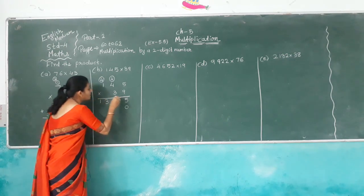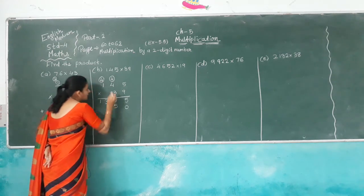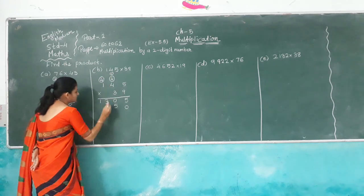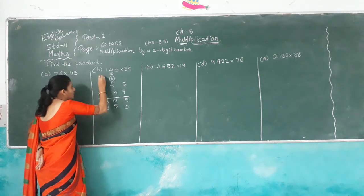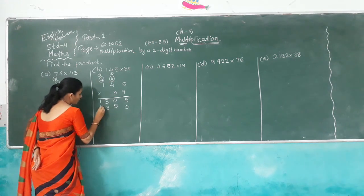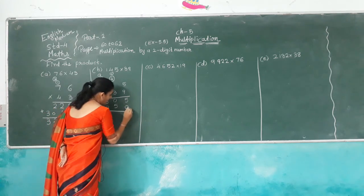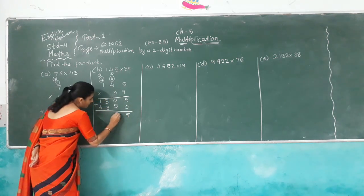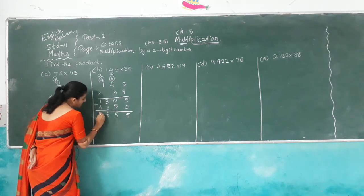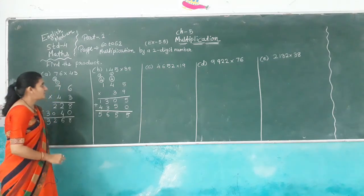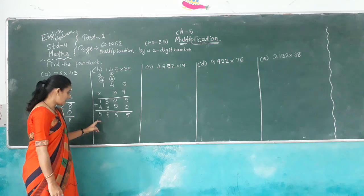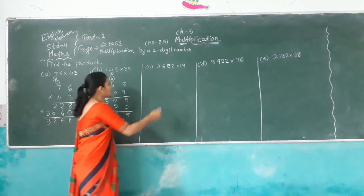So first keep 1, 0. 3 times 5 is 15, carry over 1. 3 times 4 is 12, 12 plus 1 is 13, carry over 1. 3 times 1 is 3, plus 1 is 4. Now add both numbers: 5 plus 0 is 5, 0 plus 5 is 5, 3 plus 3 is 6, 4 plus 1 is 5. So 145 multiplied by 39, you get answer 5,655.